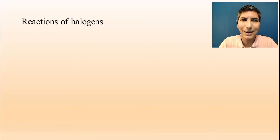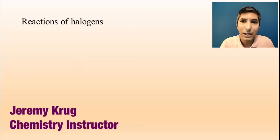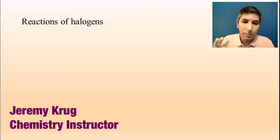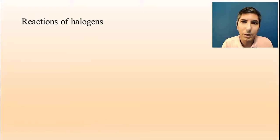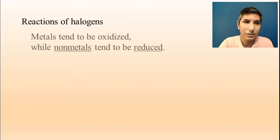Hi there, my name is Jeremy Krug, and in this video we're going to move right along with the next part of Unit 4, Section 9, which is about redox reactions. In the last video, we looked at the most common types of redox reactions, which are metals being reacted with metal ions. In this video, we're going to start by looking at reactions of halogens.